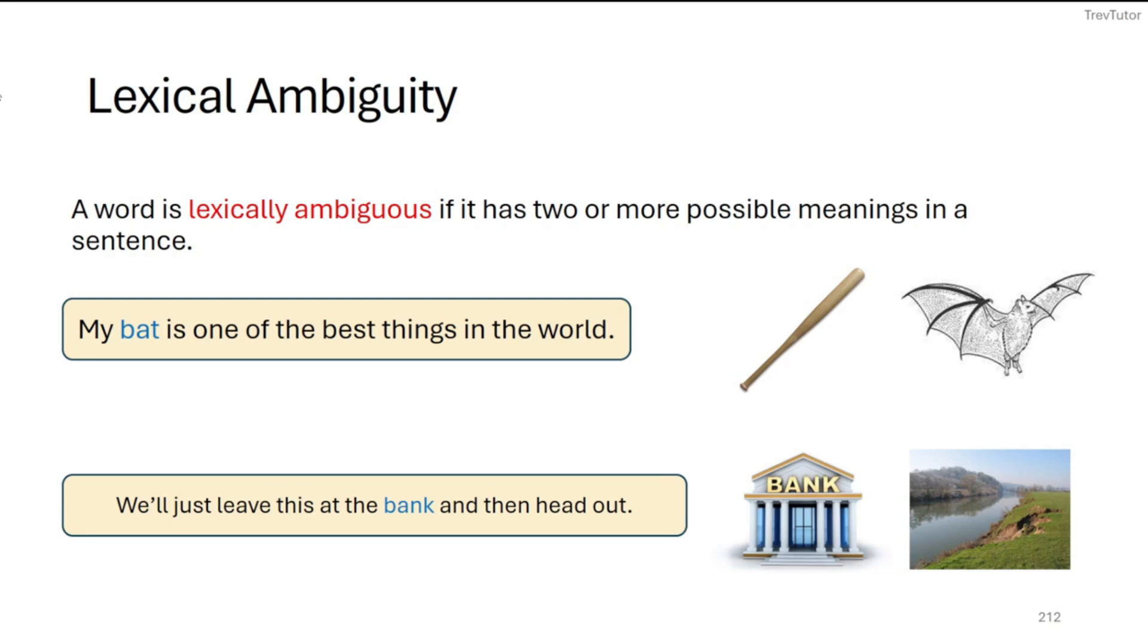The first one is lexical ambiguity. And that is when a word basically is a homophone or represents homonymy between two different versions of the word. So my bat is one of the best things in the world.